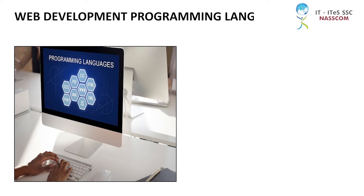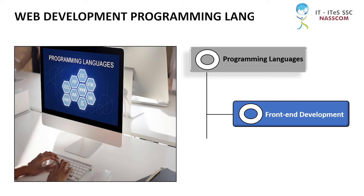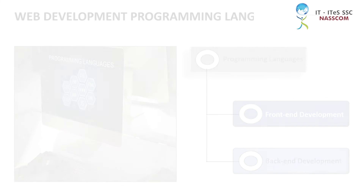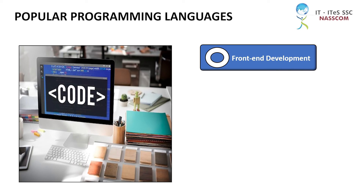We use programming languages to communicate with computers. They are of two types: front-end development and back-end development. The most popular front-end development languages are JavaScript, HTML, and CSS.